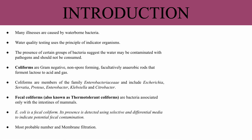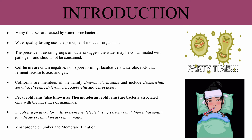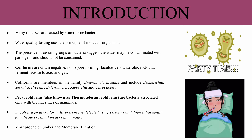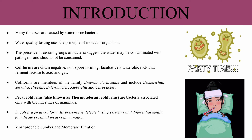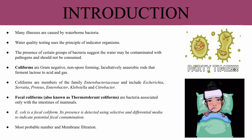Like we discussed in the last module, many illnesses stem from waterborne bacteria, making water testing crucial for preventing such diseases. Water quality testing often uses indicator organisms which signal potential contamination. Coliforms are a key group used in these tests. They are gram-negative, non-spore-forming rods that ferment lactose to produce acid and gas within 48 hours and are commonly found in soil and plants. Their presence does not necessarily indicate unsafe water.